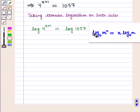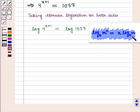We know that log_b(m^n) = n × log_b(m). Now using this property here, we get (x+1) × log(4) = log(1057).